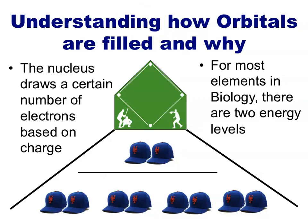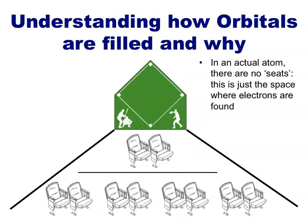For most of the elements important in biology, we will only have to consider the first two energy levels. These levels contain the seats where the electrons can sit: one orbital with two seats in the first energy level, and four orbitals for a total of eight seats in the second energy level. Of course, there are no actual seats for an electron in an atom — only spaces where electrons are found, if they are there at all. If the atom lacked any electrons, there would be no energy level or clouds or spaces set up to receive them.